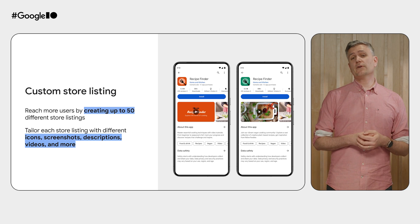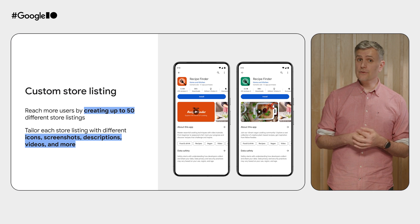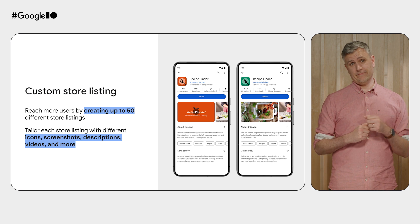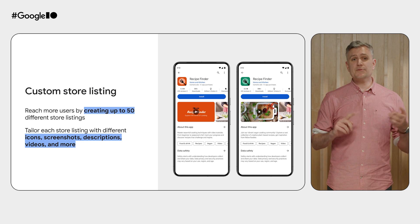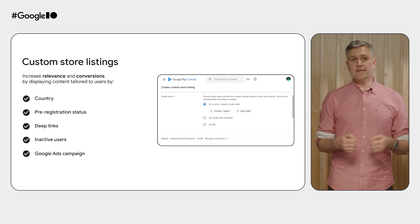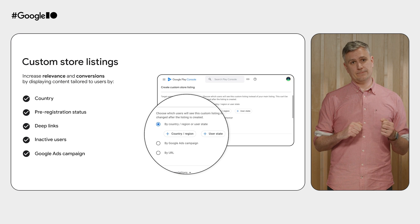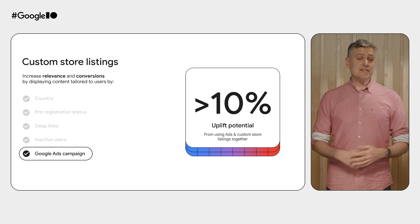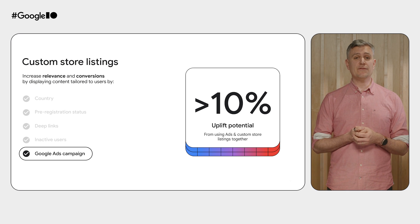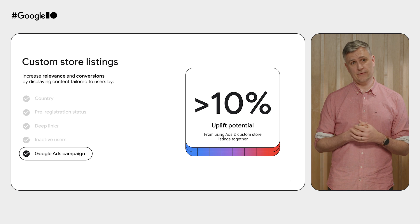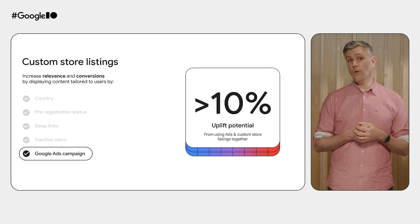This is why we built custom store listings to help you increase relevance and conversions, and you can create up to 50 of them. You can use different screenshots, videos, descriptions, and icons for different audience segments based on country, deep link, ad campaign, and more. Store listings linked to ad campaigns allow you to create more seamless and consistent messaging for visitors coming from beyond the Play Store. Developers using these listings can see conversion uplifts of up to 10% or more.